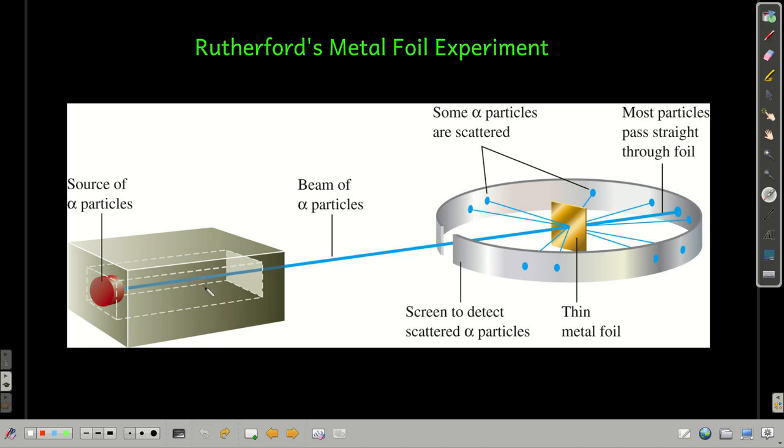He had a source of what are called alpha particles. At that point, what they knew about alpha particles is that they were positively charged, and they were, compared to what they knew about electrons, quite massive and bigger than an electron. So, he had this sheet of thin metal foil in the middle here. He had a detector right here, and this detector would show whenever an alpha particle hit it. It would leave a mark.